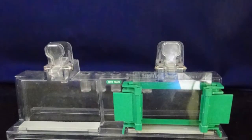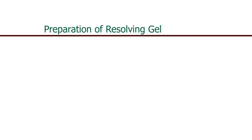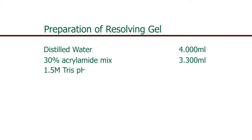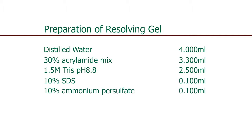Now cast the gels. For the preparation of resolving gel, we require distilled water of 4 ml, 30% of acrylamide mix of 3.3 ml, 1.5 molar tris of pH 8.8 of 2.5 ml, 10% SDS of 0.1 ml, 10% ammonium persulfate of 0.1 ml, TEMED of 0.004 ml.